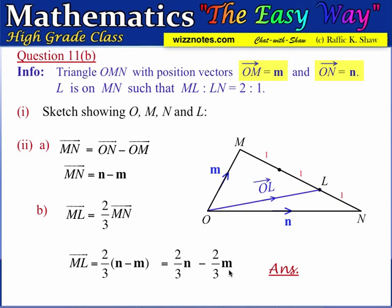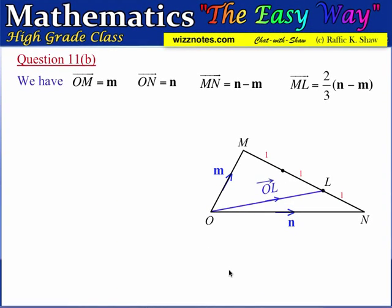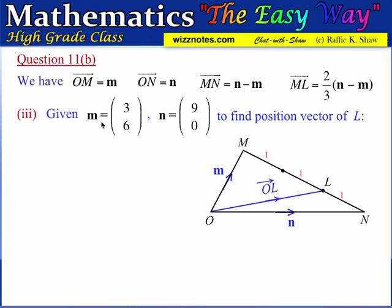We now have OM equals m, ON equals n, MN equals N minus M, and ML equals two-thirds of (N minus M). For part 3, we are given m equals column vector (3, 6) and n equals column vector (9, 0), and are required to find the position vector of L, which is the vector OL.